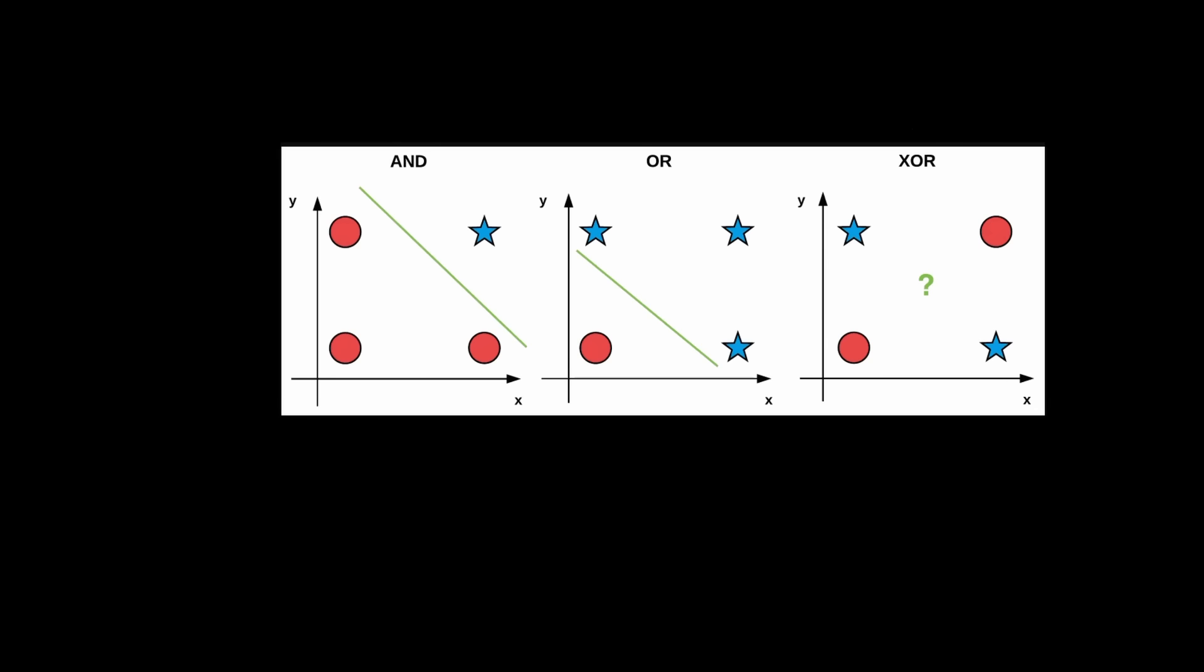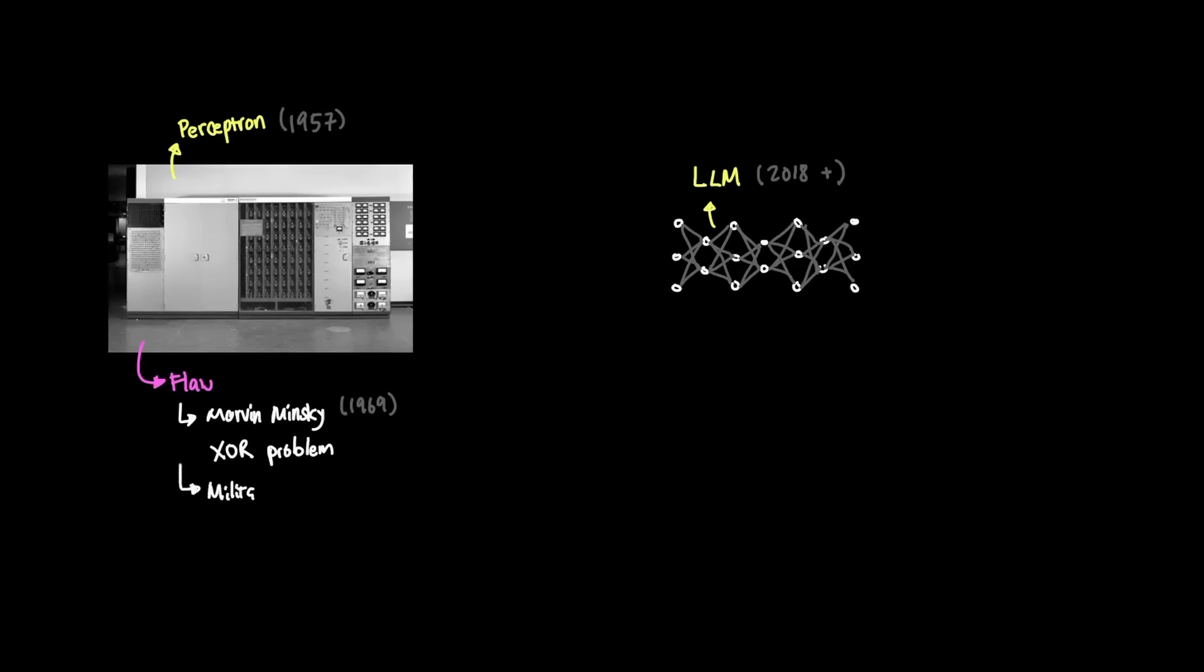To put it simpler, if the input required separating the correct answer beyond a simple line, a single-layer Perceptron wasn't able to actually learn the rule. And this sounds like a trivial and somewhat abstract thing. It was a big flaw, especially since the use cases were heavily expected for US military. And while a multilayer Perceptron could actually overcome these limitations, learning mechanisms like backpropagation didn't exist yet.